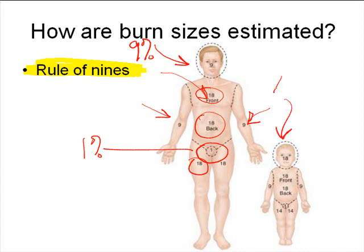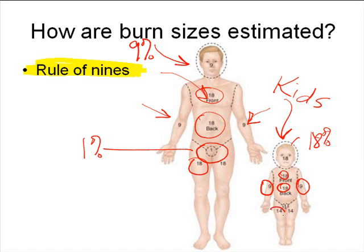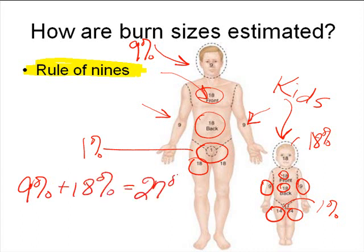For little kids, the rule of nines doesn't really apply because their head is a lot bigger relative to the rest of their body than is true for adults, so we have to use a little different estimation scheme. In children, their head accounts for roughly 18% of their surface area. The front of the torso is another 18%, the back of the torso is another 18%. Each arm is worth 9% — the front and back of the left arm is 9%, the front and back of the right arm is 9% — but each leg is only worth 14%, and the inguinal region around the groin is worth 1%. So if somebody had burned their entire right arm and the front of their torso, we would say they burned a total of 9% plus 18% equals 27% of their body.